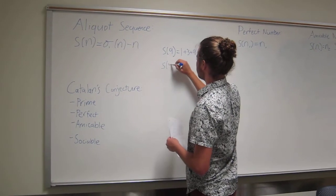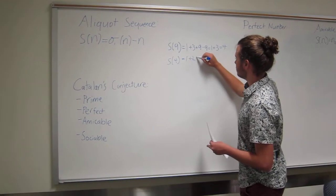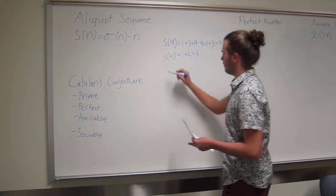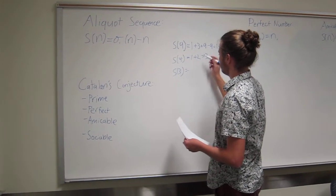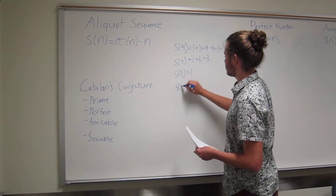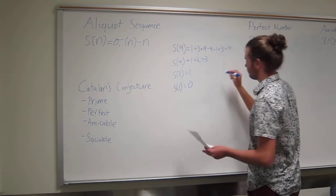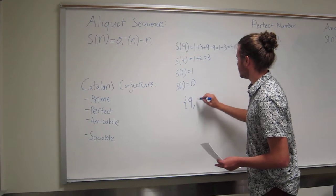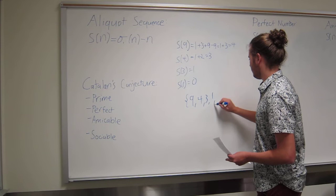The sum of the proper divisors of 4 is equal to 1 plus 2 which is equal to 3. Keep going. Sum of the proper divisors of 3 - 3 is a prime number so the only other number that divides 3 besides itself is 1. Sum of the proper divisors of 1 is equivalent to 0. It's done. So this aliquot sequence is 9, 4, 3, 1, 0.